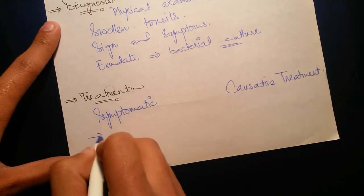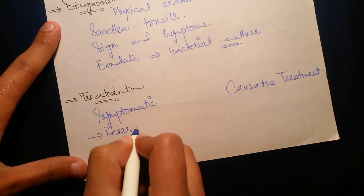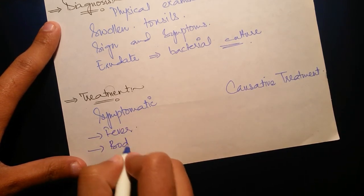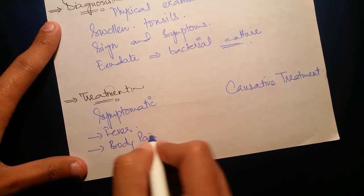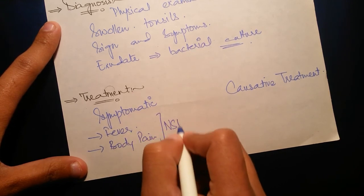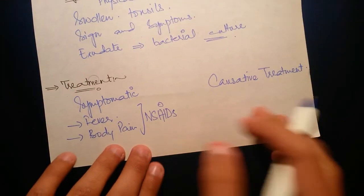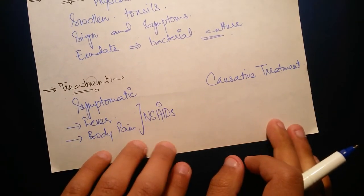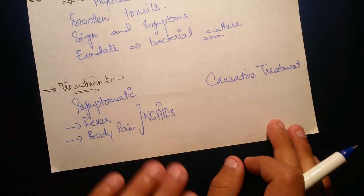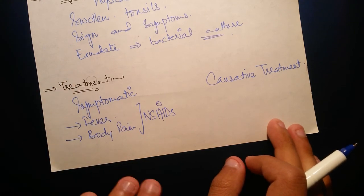Symptomatic treatment is related to fever, body pain. Painkillers or antipyretics are given to relieve the headache, fever, pain, and chills.